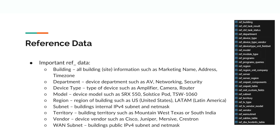Reference data allows for easy classification and process efficiency. It would not be possible for the system to operate without reference data, but it is minimal work and can easily be expanded as necessary. Some of the most important reference data fields include building, department, device type, subnet, and WAN subnet.